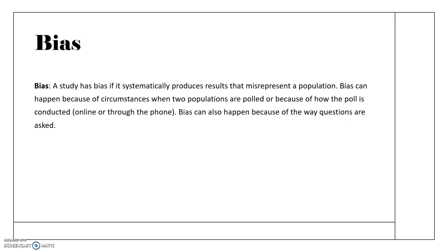The next topic is bias. A study has bias if it systematically produces results that misrepresent a population — your study is not giving you correct answers. Bias actually means lean. There's a lean to your study that doesn't give you the actual results; you're leaning on the scale.